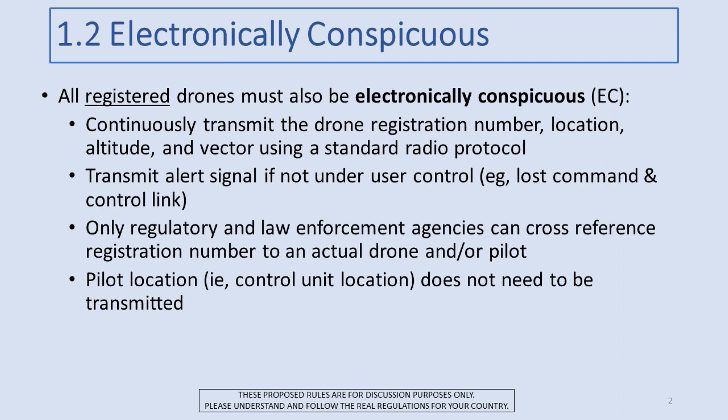Here's where things get a little controversial. What I'm proposing is that if your drone must be registered, it also must be electronically conspicuous, commonly called EC. That means you have to be continuously transmitting the drone's registration number, its location — latitude, longitude, altitude — and its vector, meaning direction and speed, using a standard radio protocol.